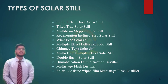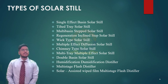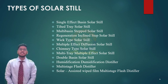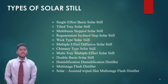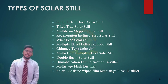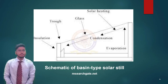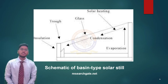There are many types of solar stills that you can see in the slide: single-effect basin solar still, tilted tray solar still, multi-basin strap solar still, regeneration inclined strap solar still, built-type solar still, multiple-effect diffusion solar still, chimney-type solar still, multi-tray multiple-effect solar still, double-basin solar still, humidification-dehumidification distiller, multi-stage flash distiller, and solar-assisted thin film multi-stage flash distiller. This is a schematic diagram for basin-type solar stills, which illustrates the working of the solar still.